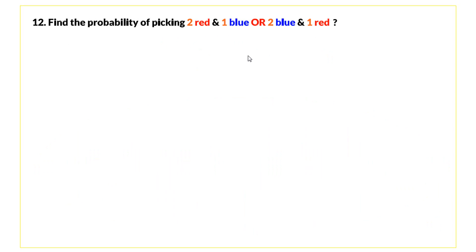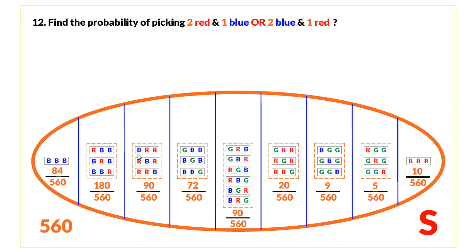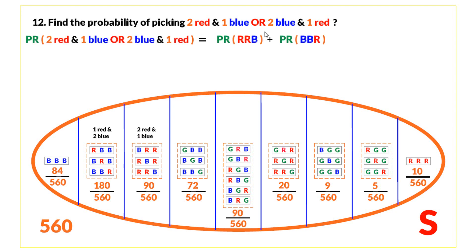Question twelve: find the probability of picking two red and one blue, or two blue and one red. From the sample space, the event 'two red and one blue' and the event 'two blue and one red' are identified. The probability is the sum of their individual probabilities, which equals 0.48. Thank you for watching and have a nice day.